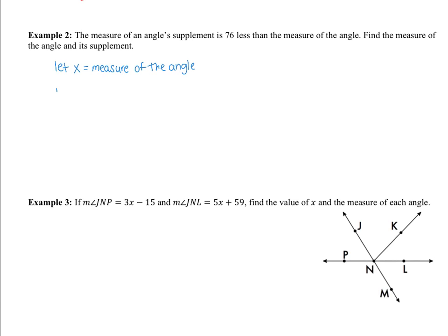We don't have to introduce another variable, but we do want to express the measure of the supplement. We know the measure of the supplement is 76 less than the measure of the angle, so it's x minus 76. Together, we know the sum of those two angles must equal 180, so x plus (x minus 76) equals 180.